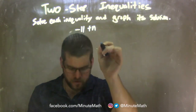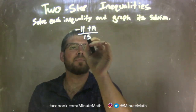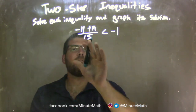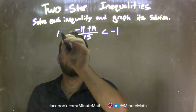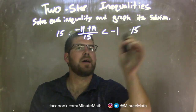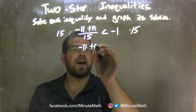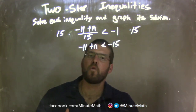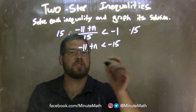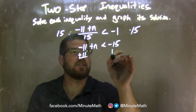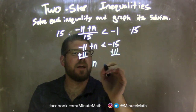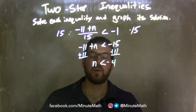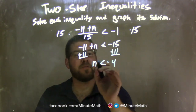Negative 11 plus n, all over 15, is less than negative 1. My first step: multiply both sides by 15, leaving me with negative 11 plus n on the left, and negative 1 times 15, which is negative 15 on the right. From there, I add 11 to both sides, leaving me with n by itself, and negative 15 plus 11 is negative 4. n is isolated and it's less than negative 4.